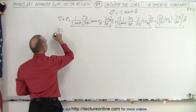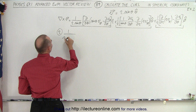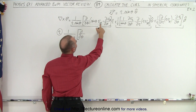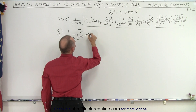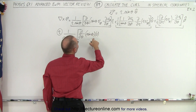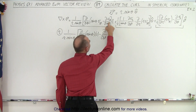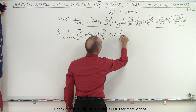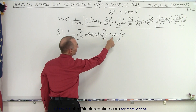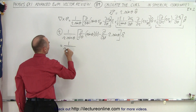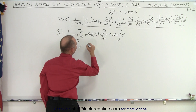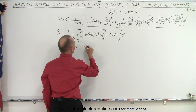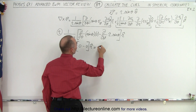Let's take the first part, which is the R part — the radial part. We have 1 over R times the sine of theta times the partial derivative with respect to theta of sine of theta times the phi component of the vector. We don't have a phi component, so that's sine of theta multiplied by 0, which goes to 0. Minus the partial derivative with respect to phi of the theta component, which is R times sine of theta. There's no phi dependence there, so that partial also gives 0. This whole R component becomes 0.